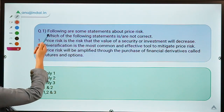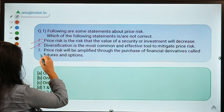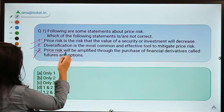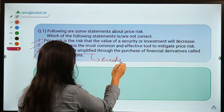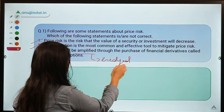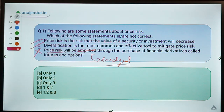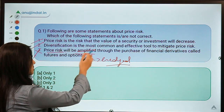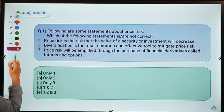Going back to the statements: the first is correct, the second is correct. The third statement is not correct because price risk is hedged through the purchase of financial derivatives rather than being amplified. Although derivatives can amplify certain types of risks, for price risk they help to hedge. Moving ahead to the next question.